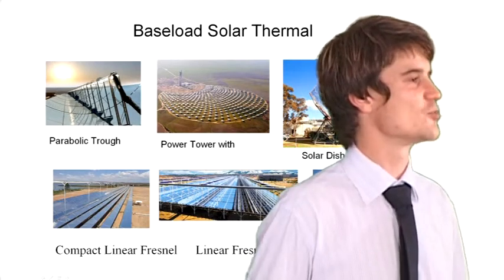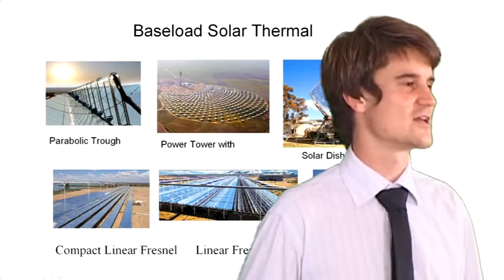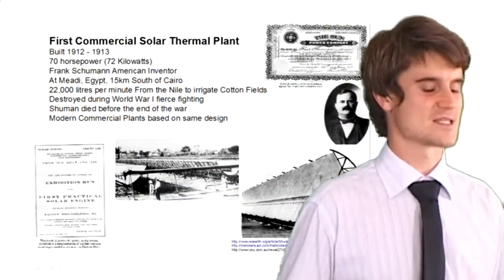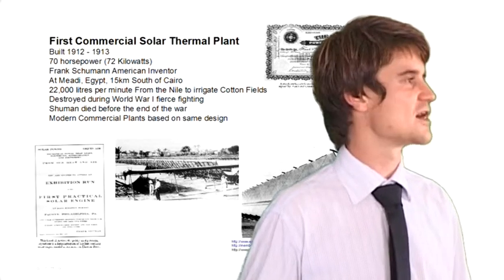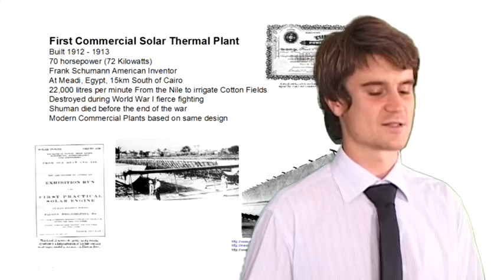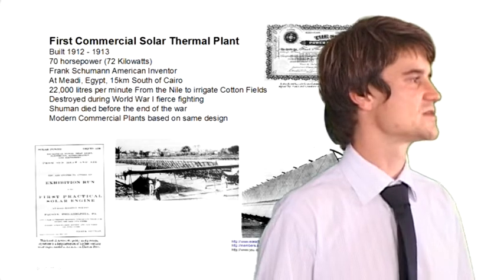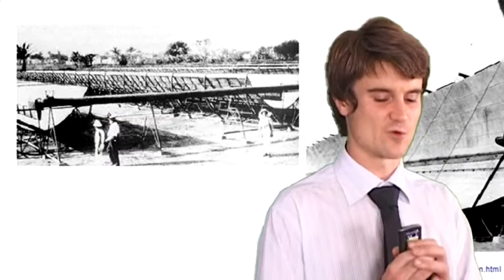If you want to know about solar thermal, you've got to go back to 1912, similar age to the motor vehicle. We've got a guy, Frank Schumann from the United States. He went to the Reichstag in Germany and he got a grant to build a solar thermal field to pump water. They pumped water to irrigate cotton fields south of Egypt. They used giant troughs and the troughs reflected light on the pipe, like I spoke about before. That drove the pump and pumped the water, 22,000 litres per minute.